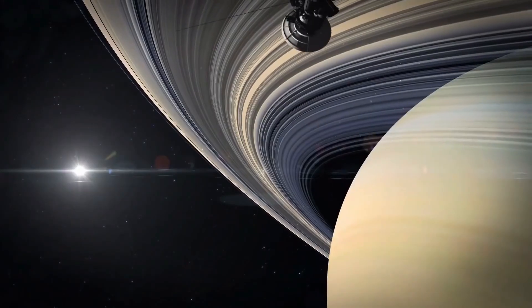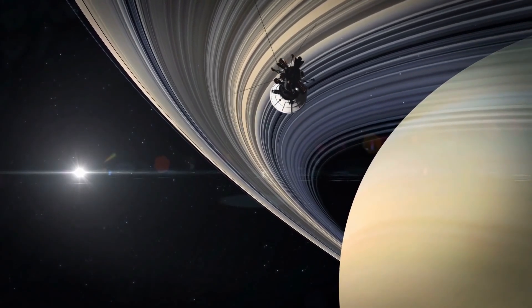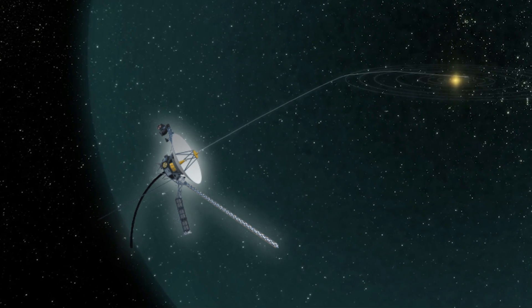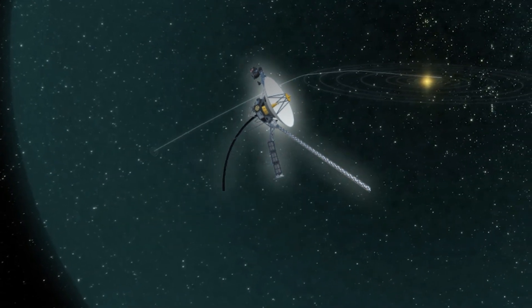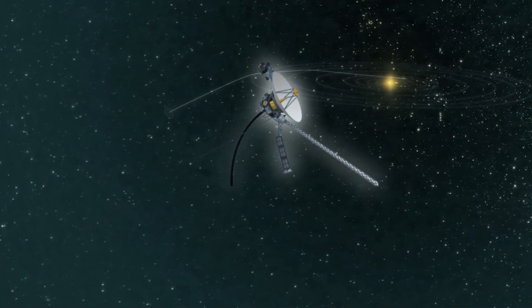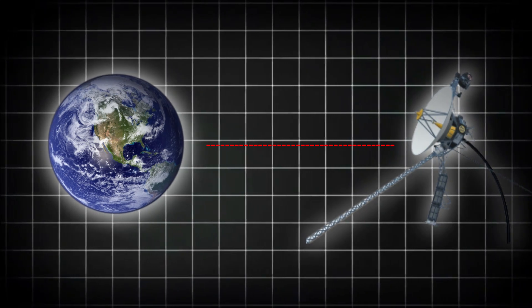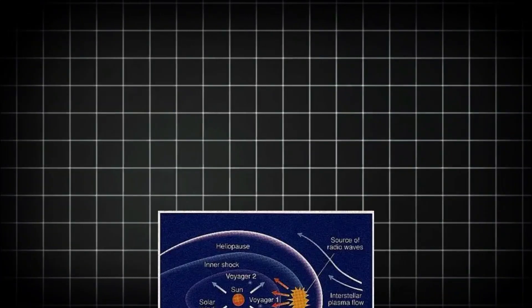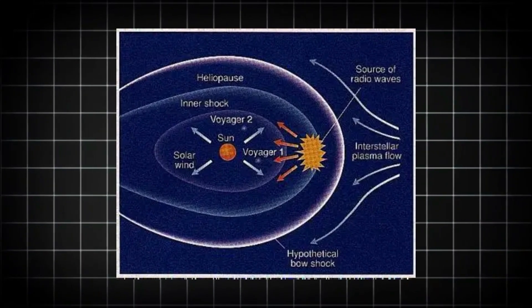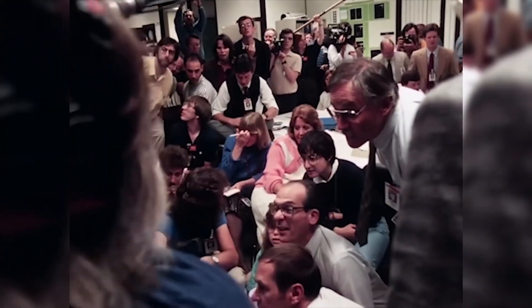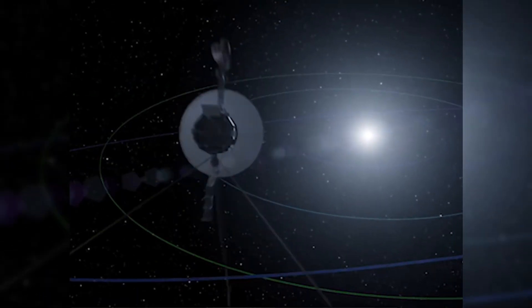The critical question now is, how do we prepare for what's out there? Could these unknown bodies pose a threat to future space missions, or could they hold the key to advancing humanity's reach into the stars? If Voyager's sensors are picking up interactions with things we didn't even know existed, what else might be hiding in the deep, cold dark? And yet, amid the tension of the unknown, there's hope.